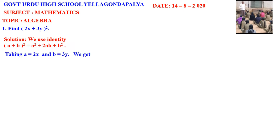Now, take a is equal to 2x and b is equal to 3y. That means in place of a, you write 2x; in place of b, you write 3y.